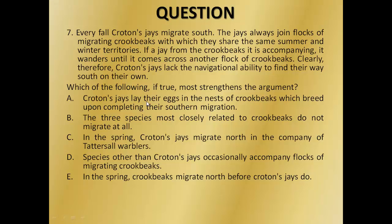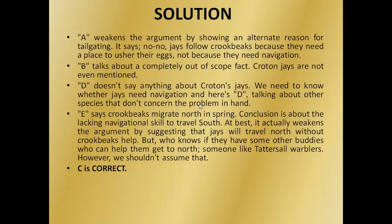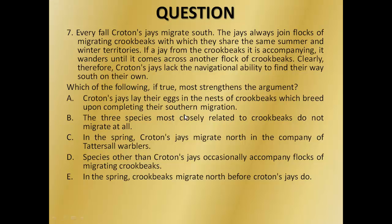Option A says Croton's jays lay their eggs in the nests of crookbeaks, which breed upon completing their southern migration — this weakens rather than strengthens the argument, so A is ruled out. Option B says the three species most closely related to crookbeaks do not migrate at all — this is completely out of scope, so B is ruled out. Option D says a species other than Croton's jays occasionally accompanies flocks of migrating crookbeaks — this doesn't say anything specific about Croton's jays. Option E actually weakens the argument. Our correct answer is C: in the spring, Croton's jays migrate north not in the company of crookbeaks — this strengthens the argument by suggesting the jays follow crookbeaks only when heading south, implying they lack independent navigation southward.